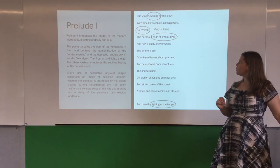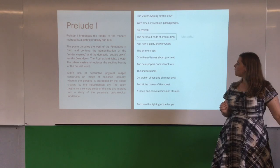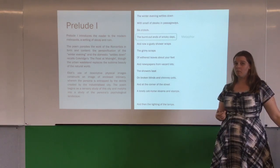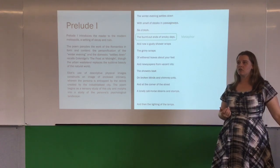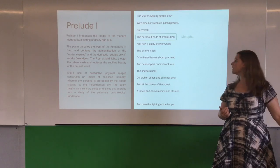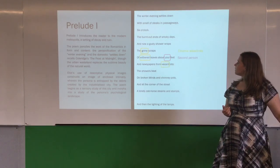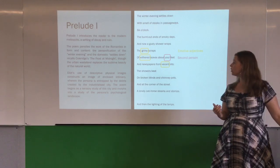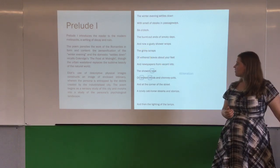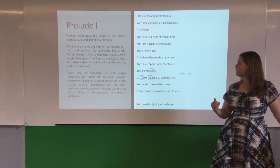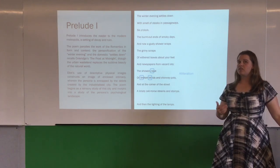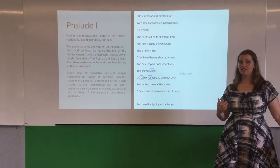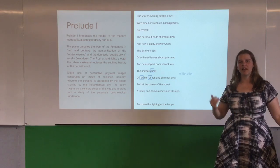Look at this motif of time. The metaphor 'the burnt out ends of smoky days' is the setting of the poem — a time of waste, a time of decay. The second person and the emotive adjectives here add to that tone, as does the alliteration: broken, blind, beat. These words create a sense of a strike and they have an effect on the ear, an effect on the musicality of the poem.